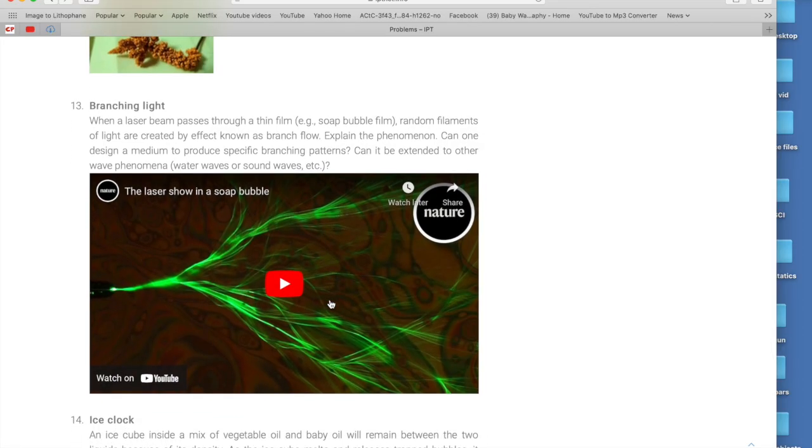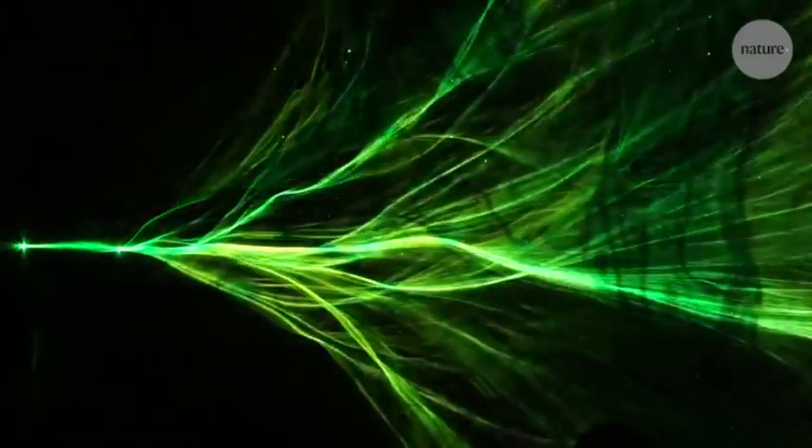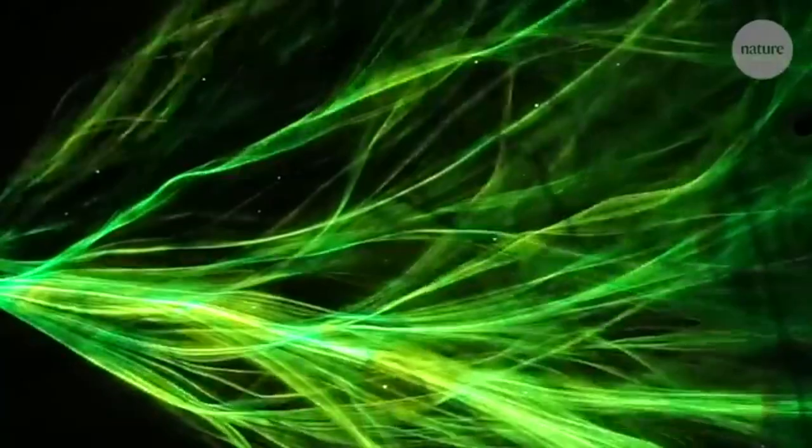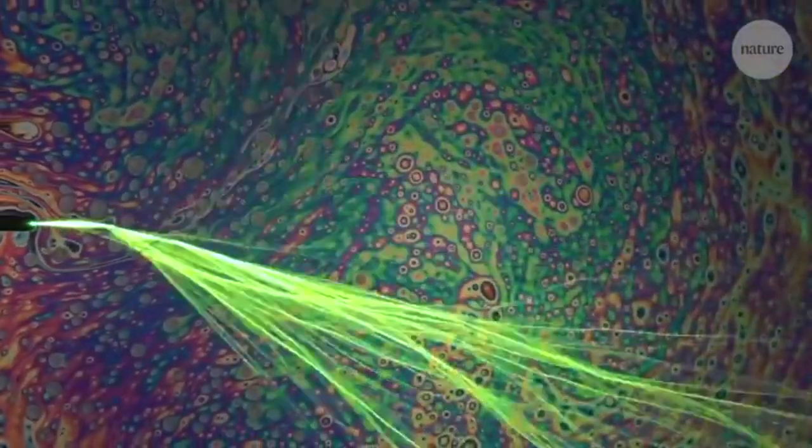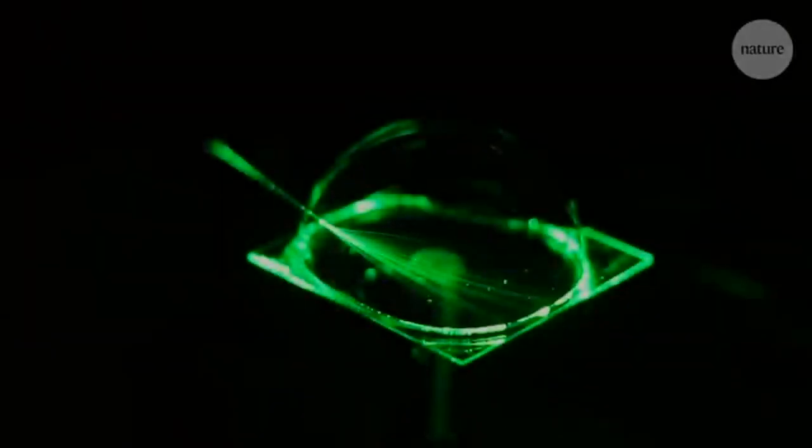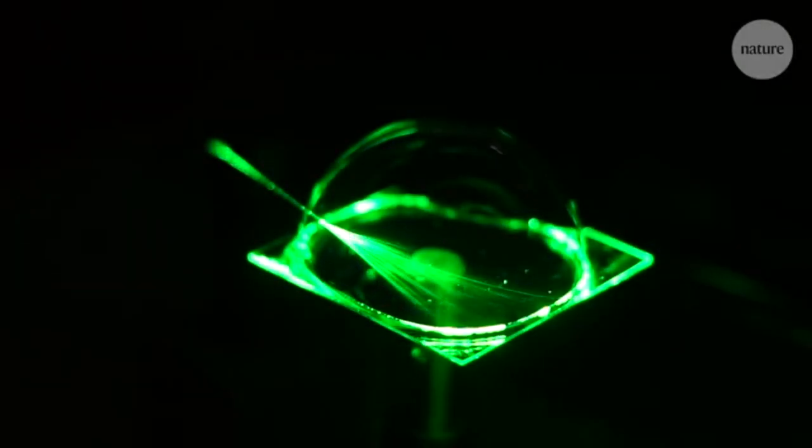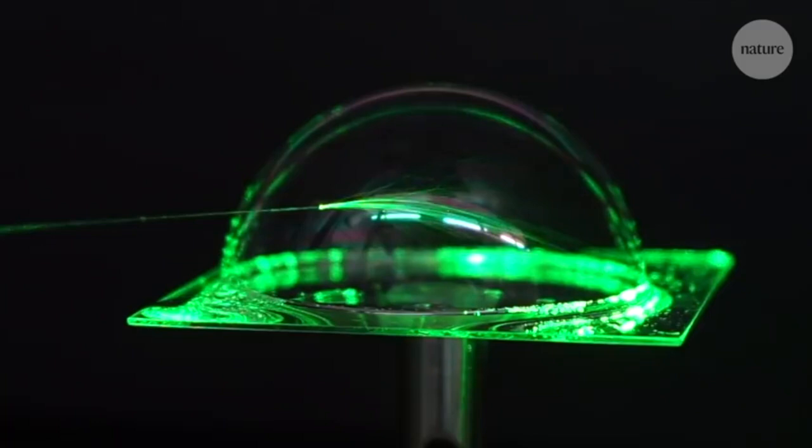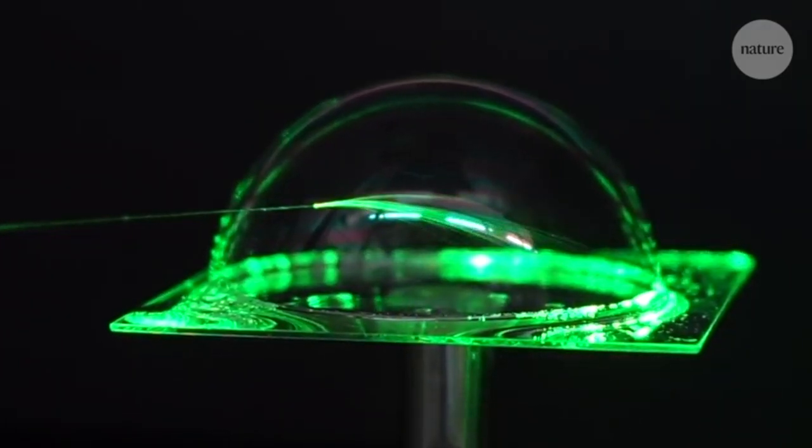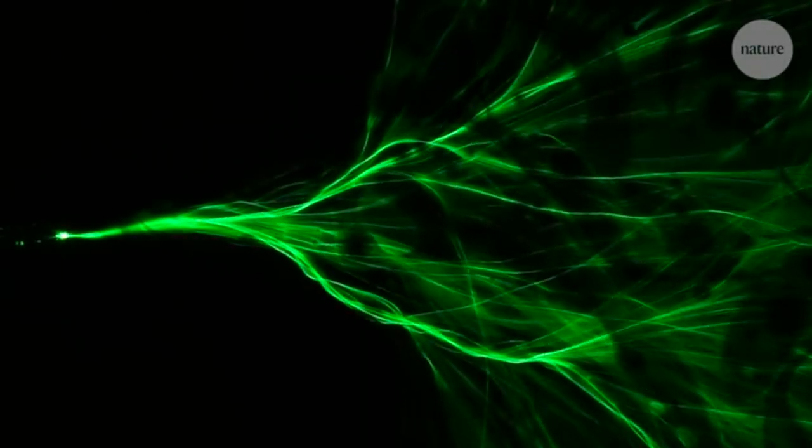Branching light. When a laser beam passes through a thin film, such as a soap bubble, random filaments of light are created by an effect known as branch flow. How do we explain this phenomenon? Can one design a medium to produce specific branching patterns? Is it extended to other wave phenomena, such as water waves or sound waves?